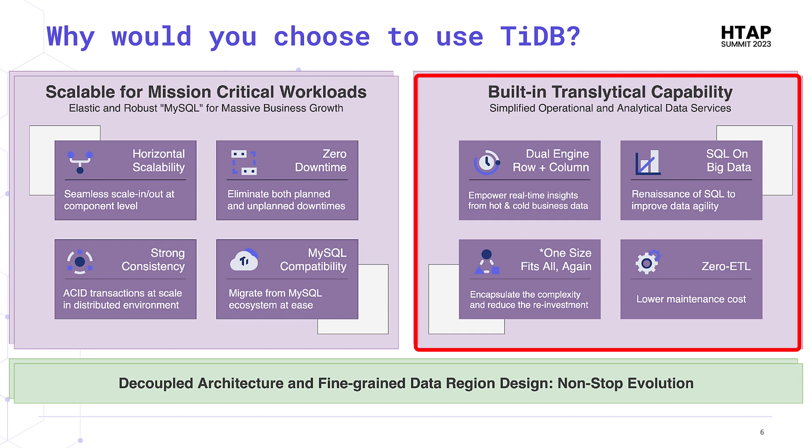On the right-hand side of the diagram we see built-in HTAP capability — simplified operational and analytical data services. Hidden in here is that TiDB has dual storage engines: a columnar store and a row-based store, which we'll go heavily into later. This empowers real-time insights from both hot and cold business data.